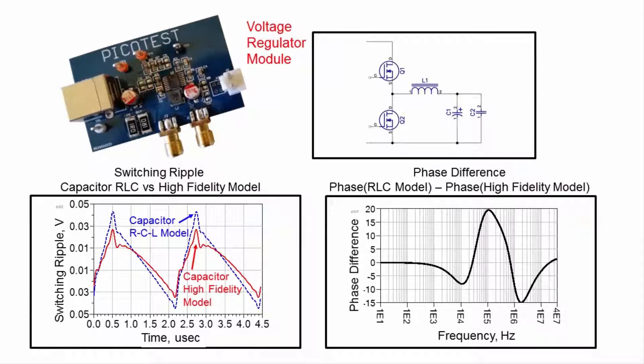Power supply switching ripple and control loop phase margin are dominated by the output inductor and the bulk capacitors. Simple RLC capacitor and inductor models can result in a design with more capacitors than necessary, adding to the design cost, consuming valuable circuit board real estate, and degrading the control loop performance.